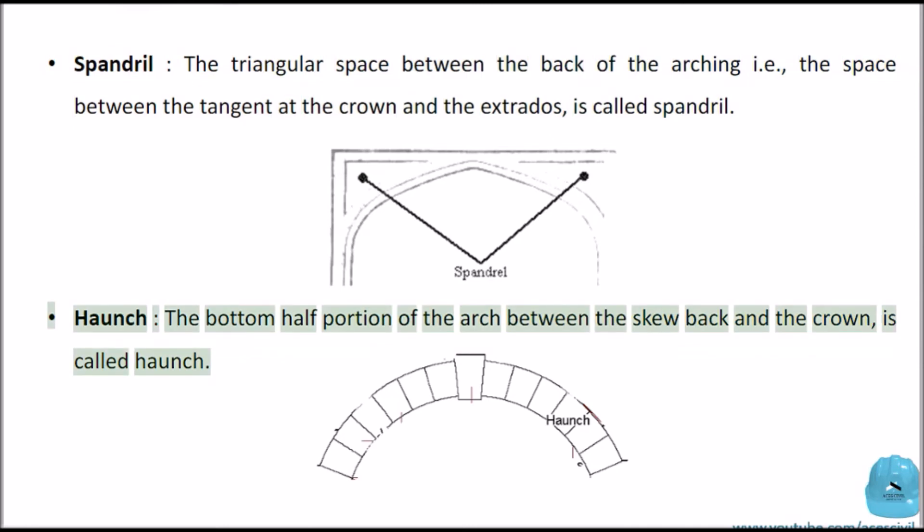Haunch: The bottom half portion of the arch between the skew back and the crown is called haunch.